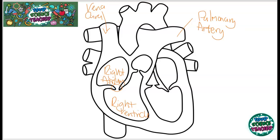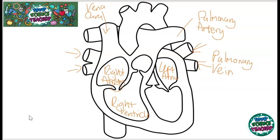Coming back from the lungs, now oxygenated, the blood needs to go back to the heart before being pumped around the body. It comes back through four holes known as the pulmonary veins — because it's coming from the lungs and going into the heart. It goes into the left atrium, through a valve to stop back flow, then into the left ventricle before being pumped around the body through the aorta — a massive artery which splits into three to take blood all around the body.